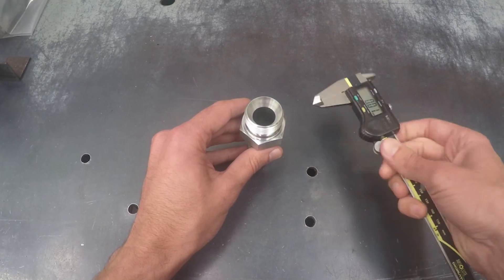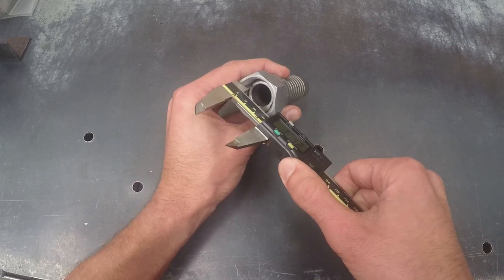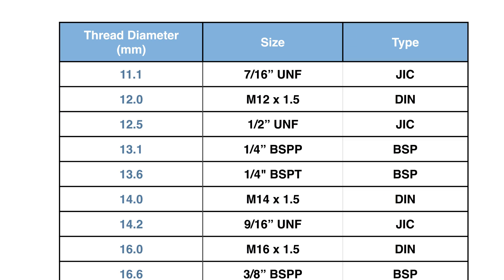To identify the size of the thread you would first measure the OD of the male or ID of the female. Once you have established the size you can then consult a thread chart.